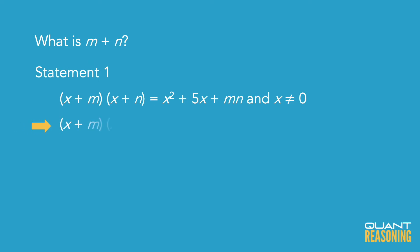So you've got (x + m) times (x + n) which would lead you to x² + xn + mx + mn.